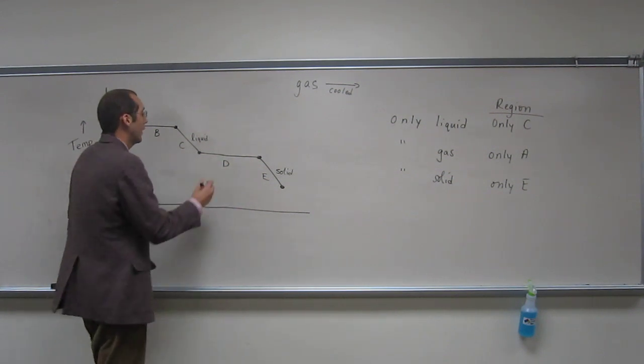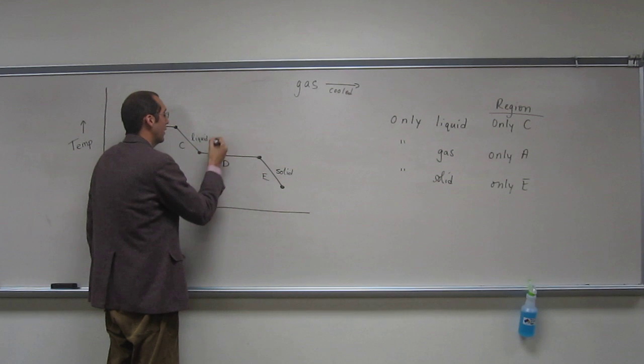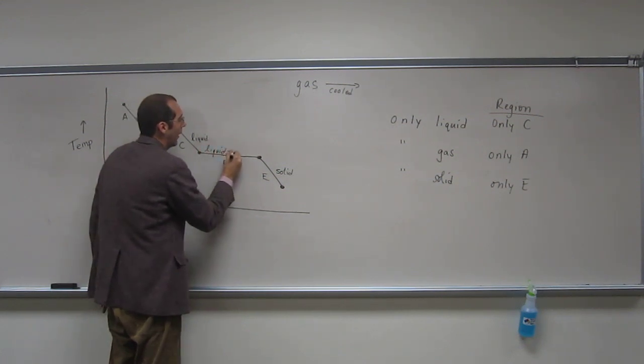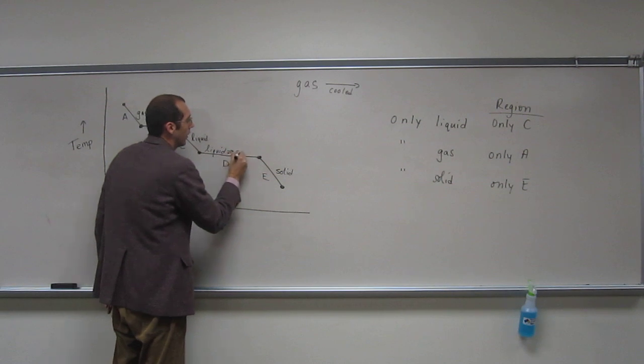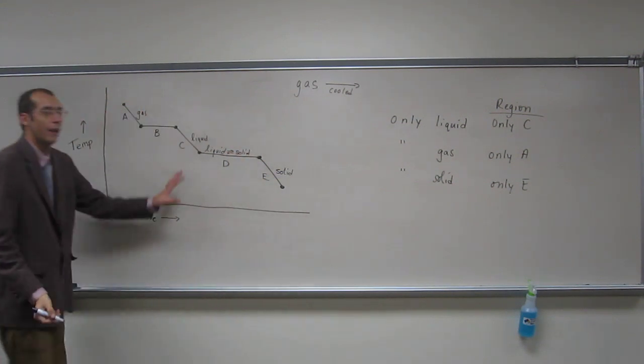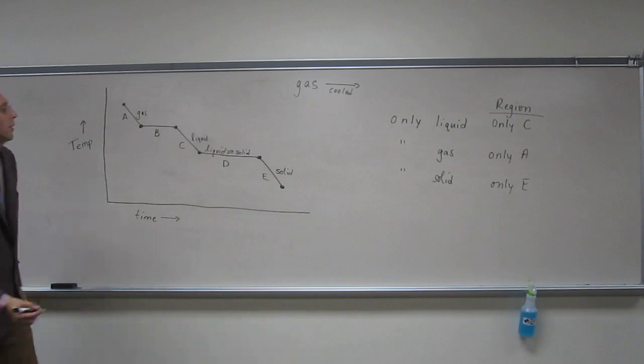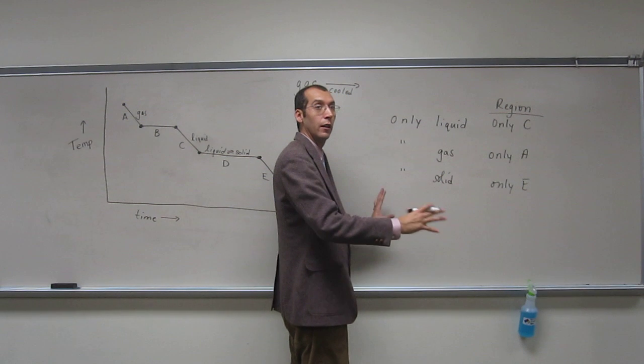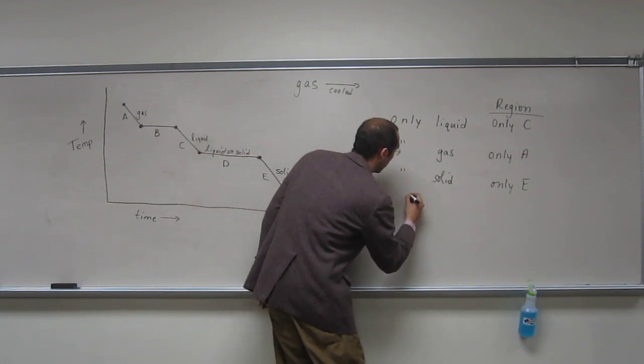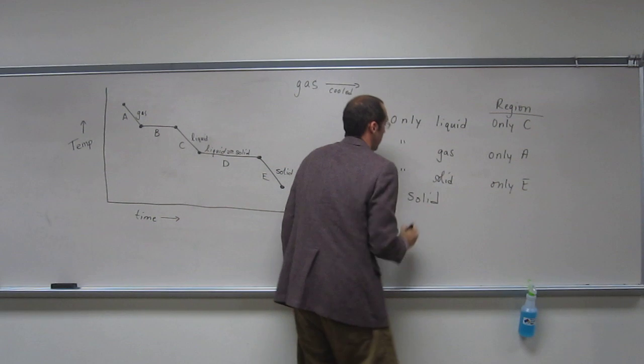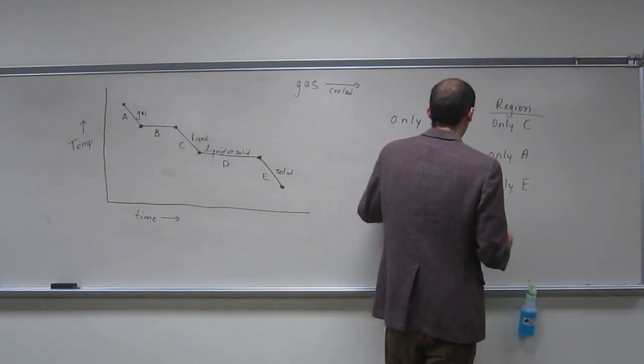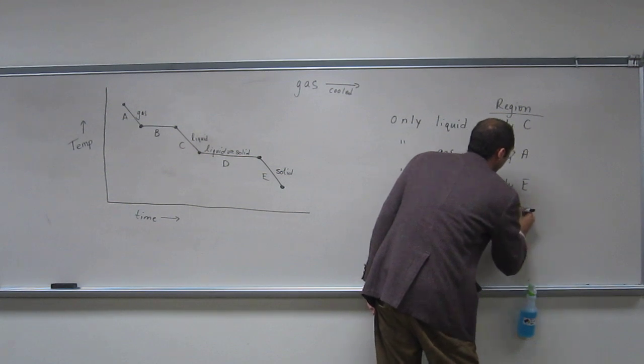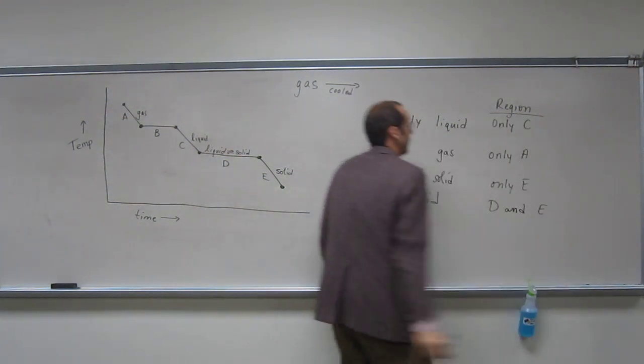So what it's saying here at D, what this curve is saying is that you've got both a liquid and a solid in equilibrium at that point. So if it asks, like that question did, where is there a solid anywhere on the curve? So solid, not only solid, but anywhere there's a solid, it's going to be D and E, like that.